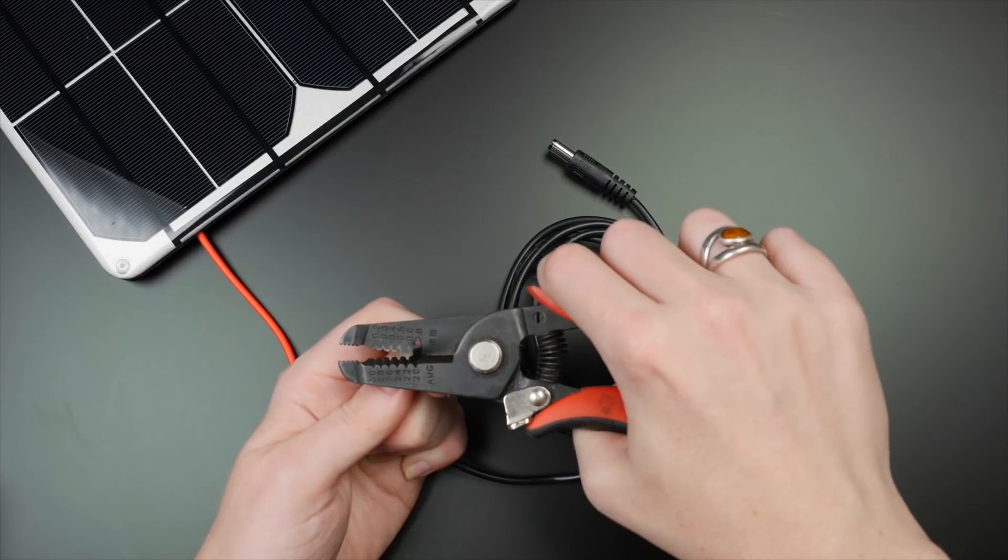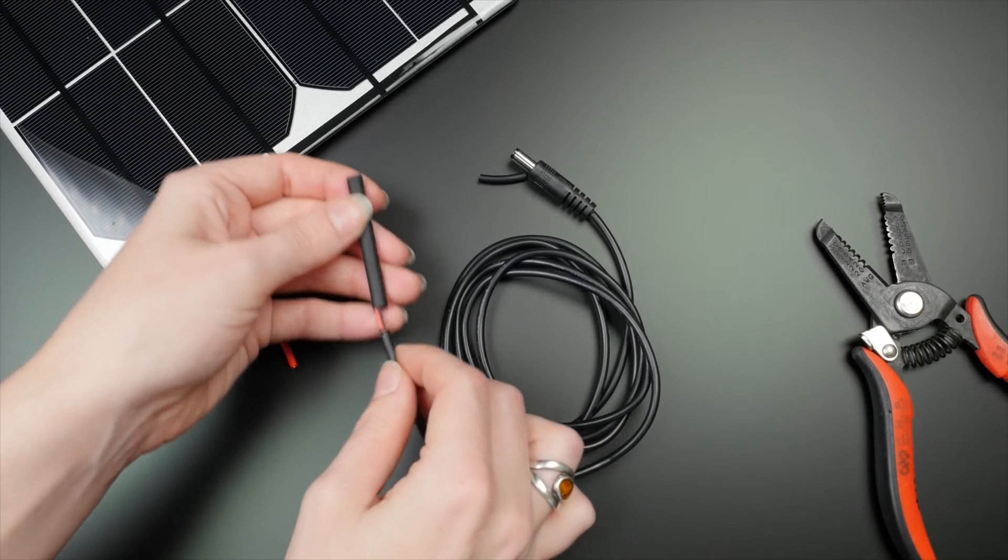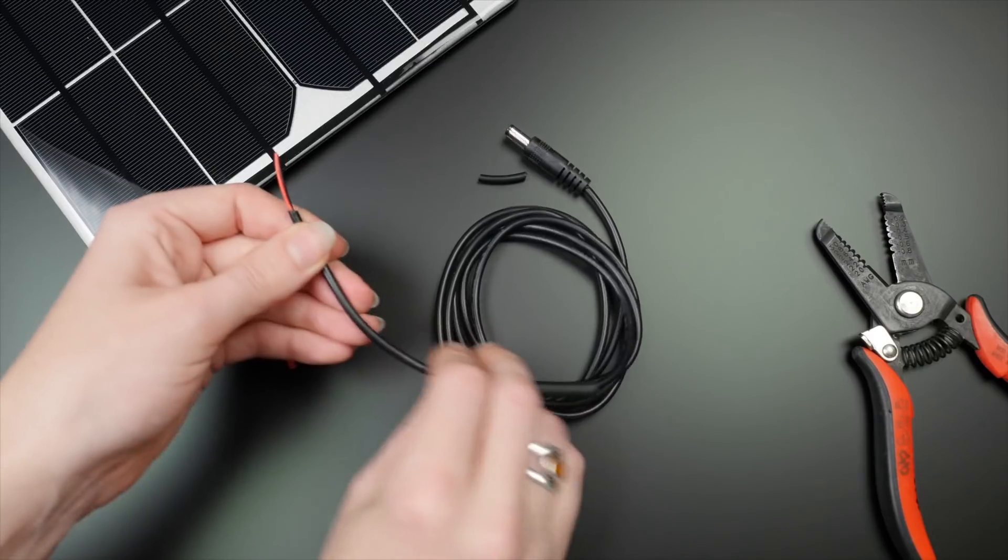Start out by cutting your wires and stripping off the outer layer of insulation. Slide a big piece of heat-shrink tubing onto one side of the wire, which we'll use at the end to seal everything up.